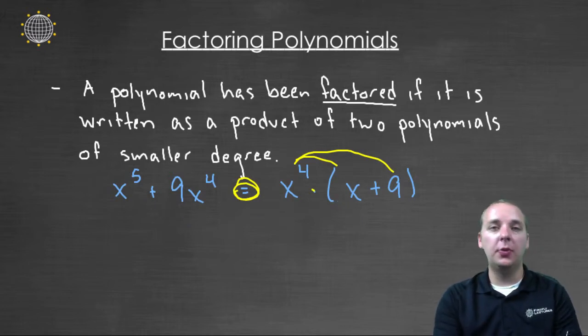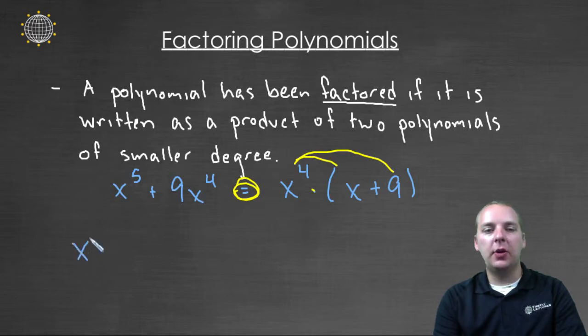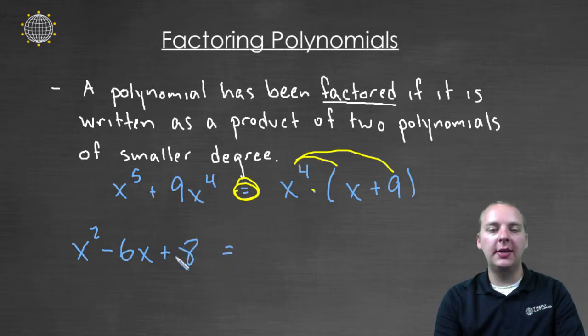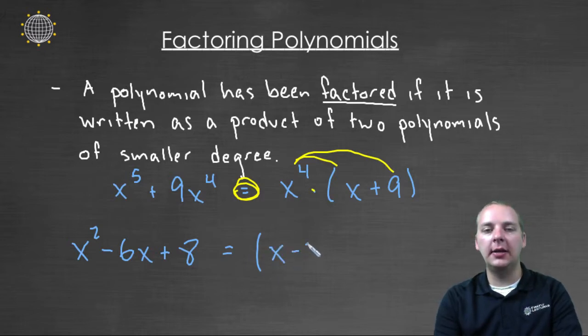Let me show you another one, completely different: x squared minus six x plus eight. That's a polynomial with addition and subtraction. If you wanted to write it as a product, you could write it as x minus two times x minus four.